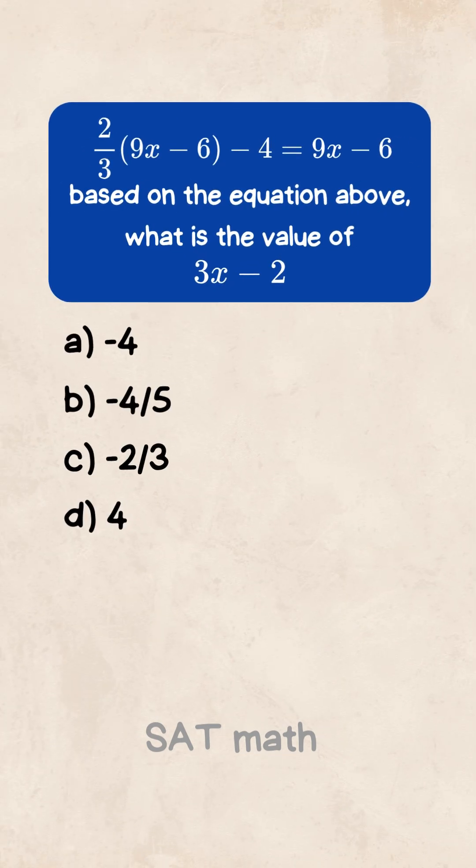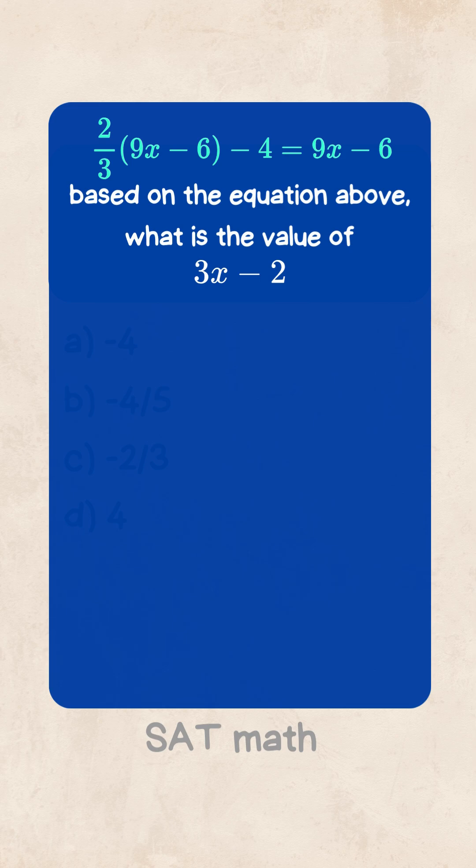Here's a quick SAT math hack to save your time. We start with the equation: 2/3(9x - 6) - 4 = 9x - 6. And the question asks, what is the value of 3x - 2?